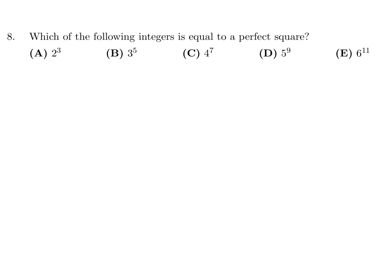Which of the following integers is equal to a perfect square? Well, if the exponent is even, it would be a perfect square. And let's see. None of them are even. Okay, that didn't help. So where do I go from here?